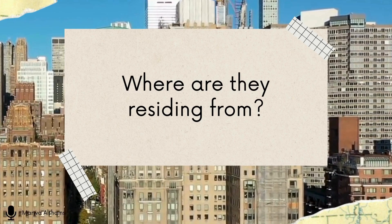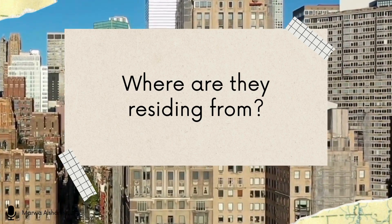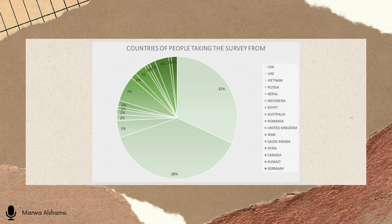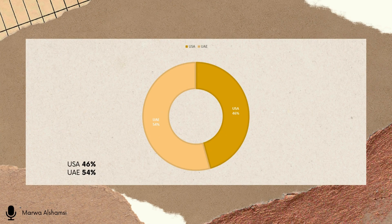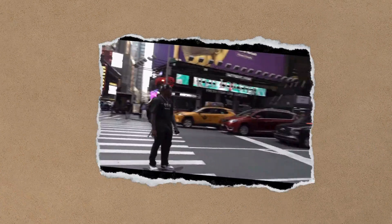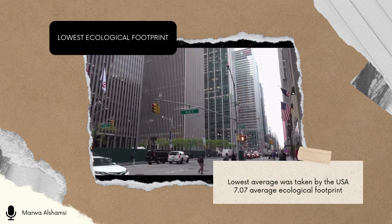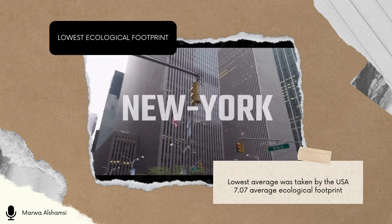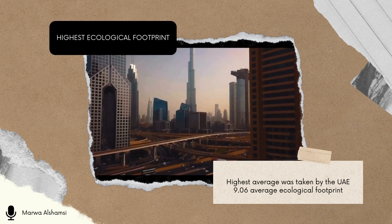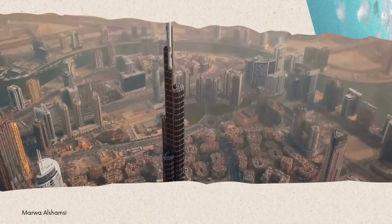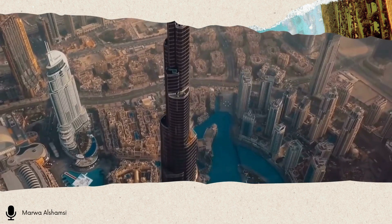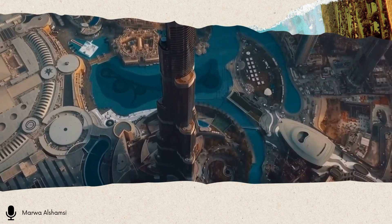An important factor to consider is the country of residence of survey participants, which included the USA, UAE, Vietnam, Australia, Russia, Nepal, Indonesia, Egypt, Romania, the United Kingdom, Saudi Arabia, Iran, Syria, Canada, Kuwait, and Germany. Comparing the UAE and USA, 54% of respondents lived in the UAE and 46% in the USA. The lowest average ecological footprint was in the USA at 7.07 GHA, while the highest was in the UAE at 9.06 GHA. This could be due to the UAE's rapid economic development leading to increased consumption of energy and water, even though it is a much smaller country than the USA.